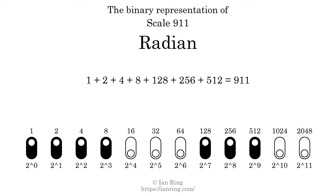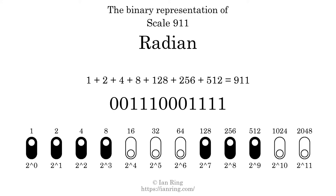That is why the scale number, in decimal, is 911. The scale number not only enumerates the scale with a unique index, but it also literally describes the tonal content of the scale, represented as a binary number in base 2.